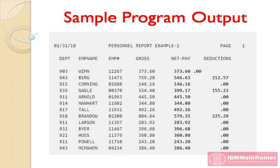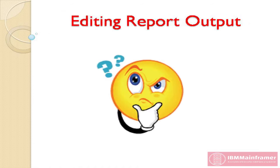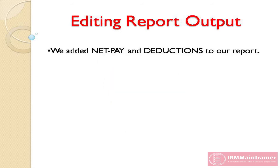This is the report output for the sample program. As you can see, the net pay and deductions columns have been added at the end. We just saw how to add a new field to the report output — so we added net pay and deductions to our report.